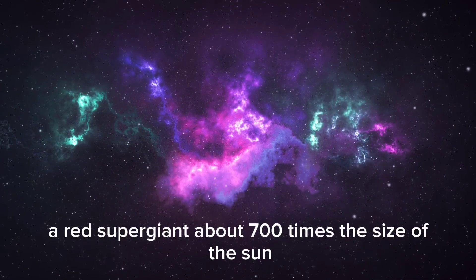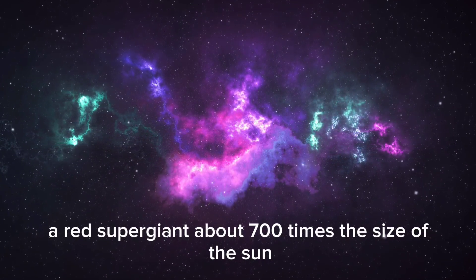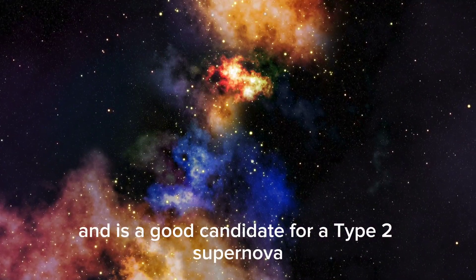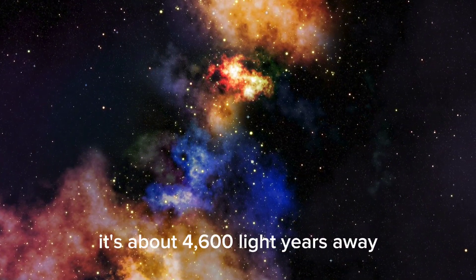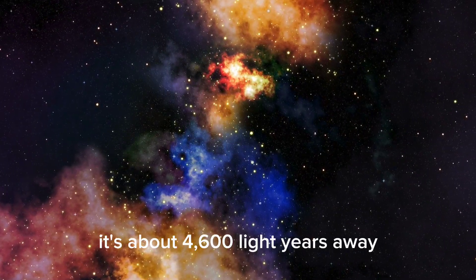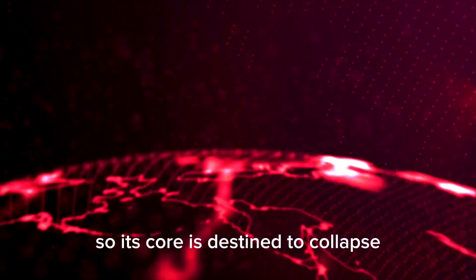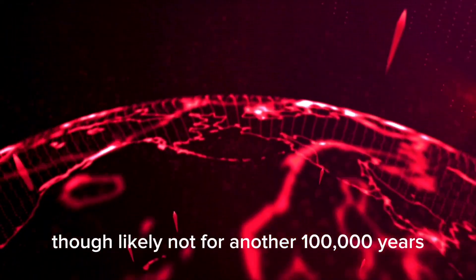Betelgeuse, a red supergiant about 700 times the size of the sun, is nearing the end of its life and is a good candidate for a type 2 supernova. It's about 4,600 light-years away and less than 10 million years old, so its core is destined to collapse, though likely not for another 100,000 years.